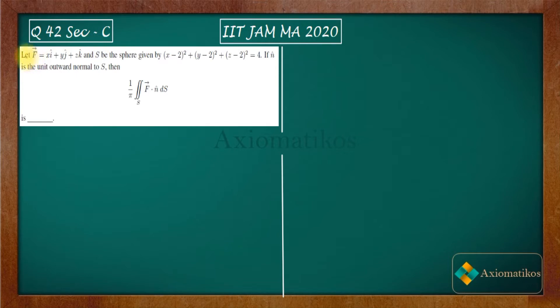So have a look. Let f vector be given by xi plus yj plus zk, and S be the sphere given by this formula: x minus 2 whole square plus y minus 2 whole square plus z minus 2 whole square equals 4.